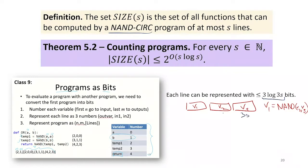We know that each line we can represent in three log 3S bits. This is log 3S. So we have at most 3S variables. We can represent each variable with log of 3S bits, and we have three of them. So that means each line is this long. The total number of bits for an S-line program is less than or equal to 3S log 3S.